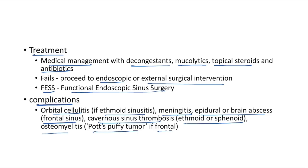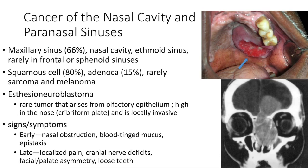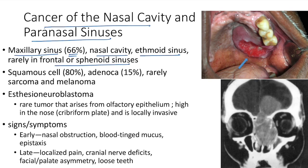Cancer of the nasal cavity and paranasal sinuses usually involves the maxillary sinus in 66% of cases. Other sites include the nasal cavity and ethmoid sinus; it is very rare in frontal and sphenoid sinuses. The most common type is squamous cell carcinoma. Esthesioneuroblastoma is a rare tumor arising from olfactory epithelium, located high in the nose at the cribriform plate; it is locally invasive.